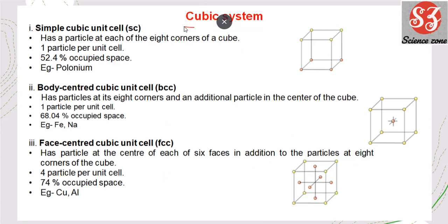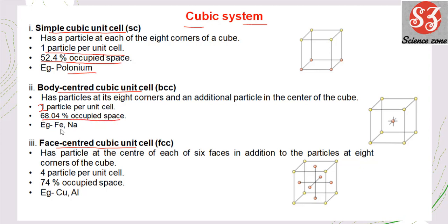For the simple cubic unit cell, atoms are only at corners, with 1 particle per unit cell and packing efficiency of about 52.4%. For the body-centered cubic unit cell, atoms are at corners and body center — 2 particles per unit cell — and space occupied (packing efficiency) is 68%. Example: iron and sodium.